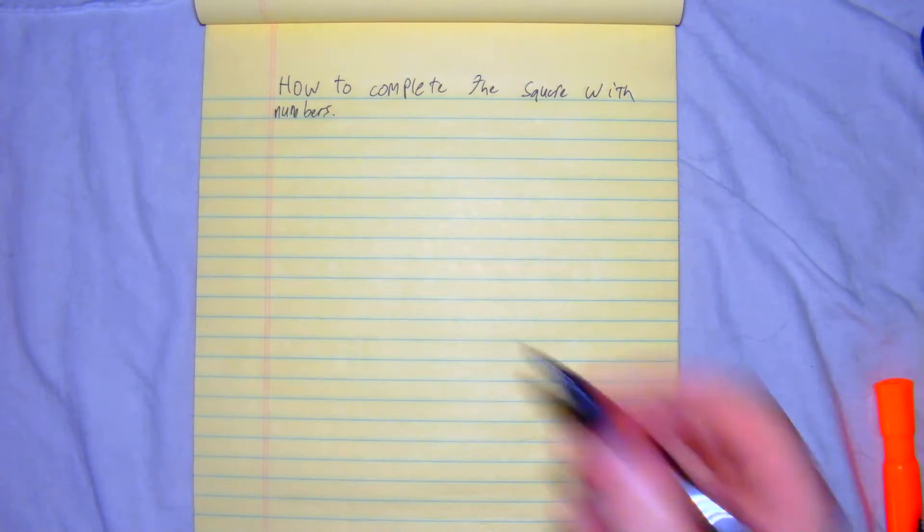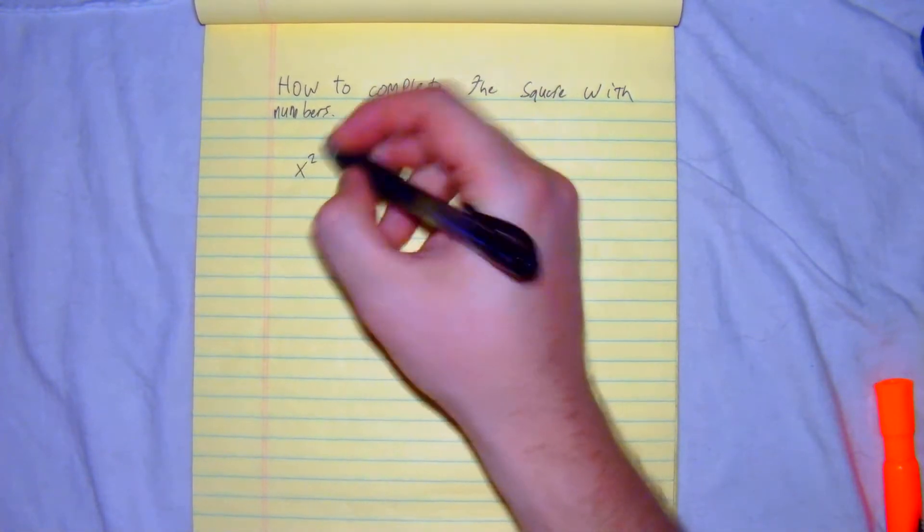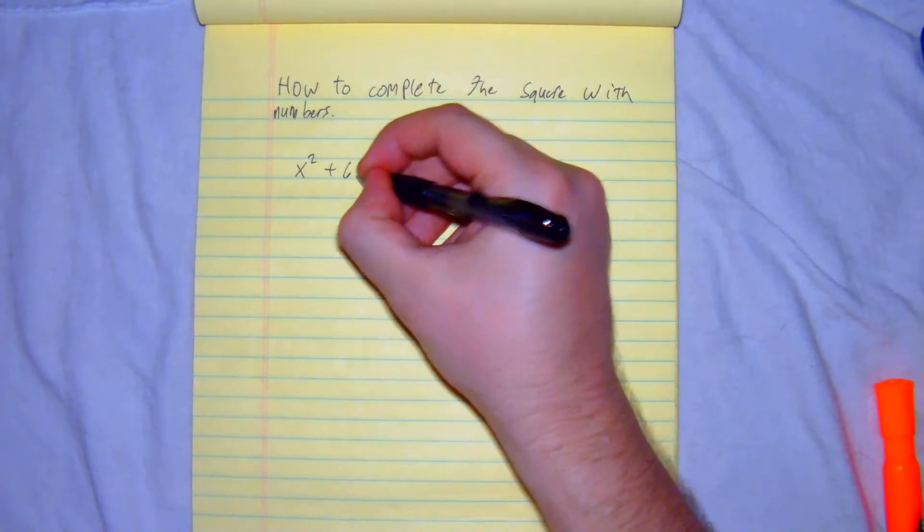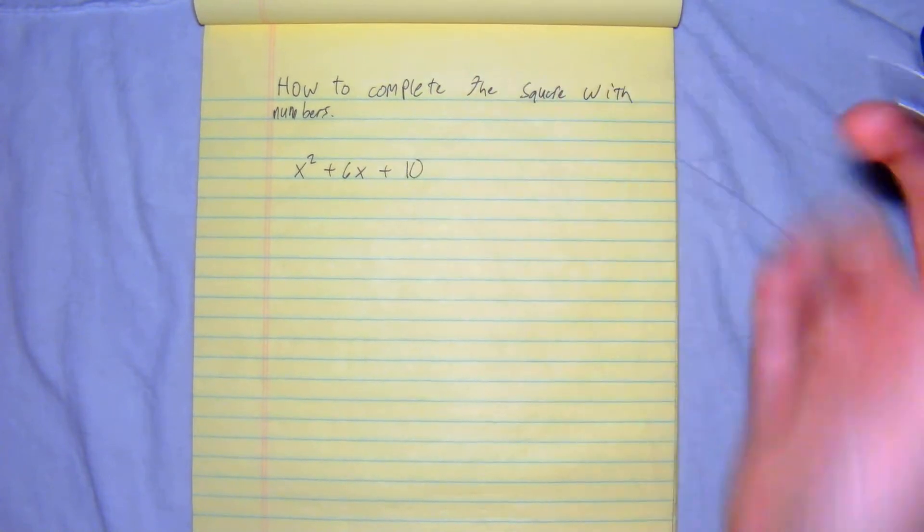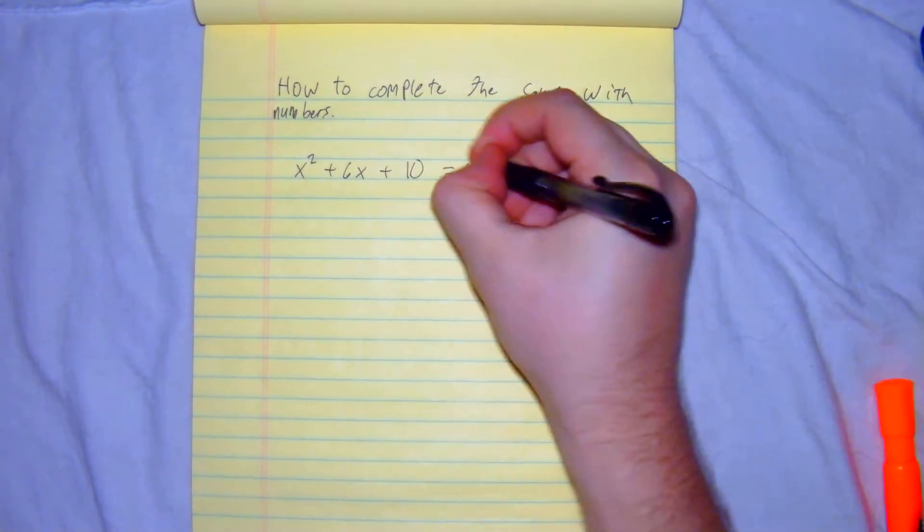So what we have here, let's just say x squared plus 6x plus, I'm going to give it a random number, 10, equals 0.